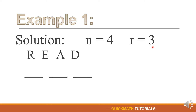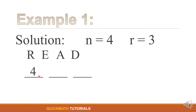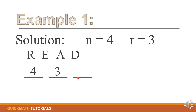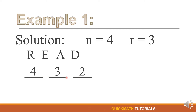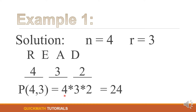We have blank one, two, and three. For the first blank, how many choices of letters do we have? Yes, we have four. For the second blank, suppose there is already one letter on the first blank, so how many choices do we have left? Yes, we have three. For the third blank, suppose there is already one letter for the first and one letter for the second, so how many choices do we have now? Yes, we have two. For our next step, we will just multiply them.